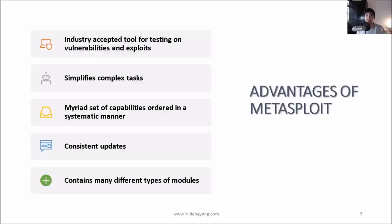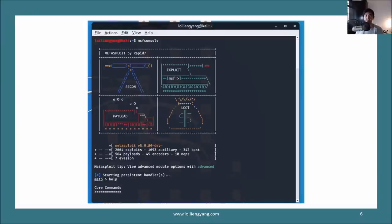Fifth, there are thousands of modules inside Metasploit Framework, built by many penetration testers, which help you find vulnerabilities, exploits, and payloads to accelerate penetration testing. In the Metasploit console screenshot — accessed by entering `msfconsole` in Kali Linux or Windows — we can see 2,004 exploits, 1,09 auxiliary, 342 post, 564 payloads, 45 encoders, 10 no-ops, and 7 evasion modules available.